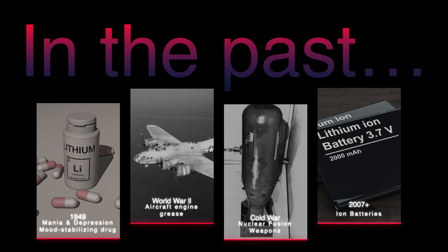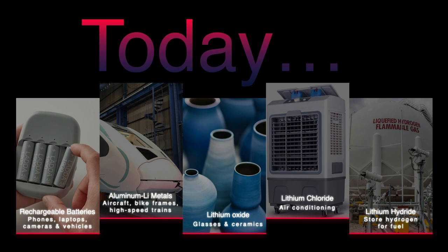How is lithium used today? Lithium is a good conductor of heat and electricity. It is also used in rechargeable batteries for phones, laptops, digital cameras, and electric vehicles. It is also used in some non-rechargeable batteries for things like heart pacemakers, toys, and clocks. Aluminum lithium metals are used in aircraft, bicycle frames, and high-speed trains. Lithium oxide is used in special glasses and glass ceramics. Lithium chloride is used in air conditioning. Lithium carbonate is used in drugs to treat manic depression. Lastly, lithium hydride is used to store hydrogen for fuel.